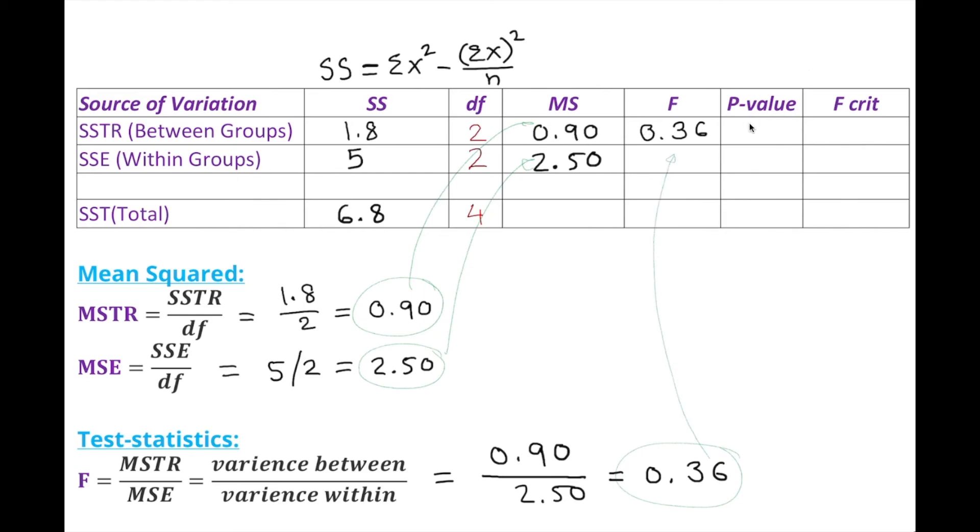For the p-value, we strongly recommend using Excel or technology. The p-value turned out to be 0.735. The critical value can be found manually or by technology, which gives us 19. This is how we actually find manually the source of variation using the formula. We can use this concept to construct one complete hypothesis for one-way ANOVA analysis of variance. In the next video, you'll find one-way ANOVA analysis of variance, and I'll also cover two-way ANOVA. Thank you for watching.